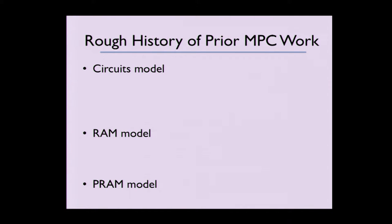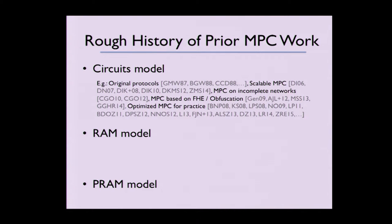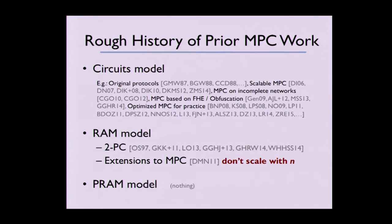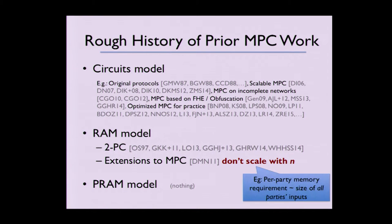In terms of multi-party computation, almost all constructions are in the circuit model — from the original protocols through scalable MPC, all optimizations still require first converting the program to a circuit. There's been comparatively a sprinkling of works looking at the RAM model, almost completely in the two-party computation model, and it seems that extending these techniques to multi-party computation doesn't scale appropriately with N. For instance, every single party in the protocol would have to maintain memory comparable to the size of everybody's input. We are also the first to look at the PRAM model.